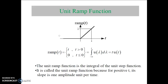The Unit Ramp function can be expressed as u_r(t), which is equal to t for t greater than 0, and u_r(t) is equal to 0 for t less than or equal to 0. This is also equal to the integration from minus infinity to t of u_r(lambda) d_lambda, which equals t times u(t). The Unit Ramp function is the integral of the Unit Step function, and is called a ramp because for positive t its slope is 1 amplitude unit per time. That means u_r(t) has amplitude value 1 for t equal to 1, and amplitude value 2 for t equal to 2.